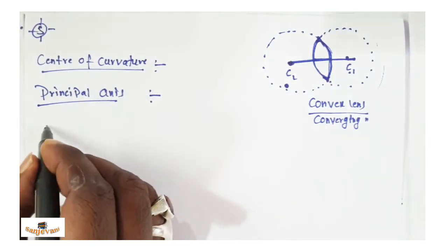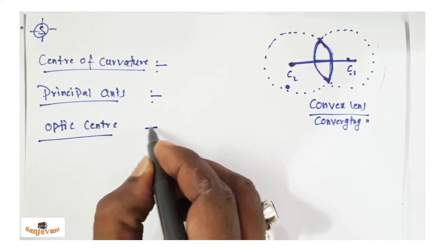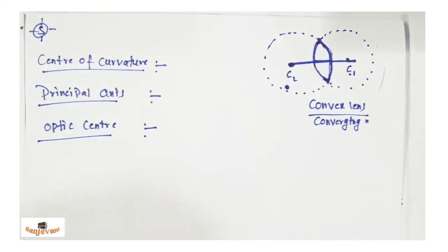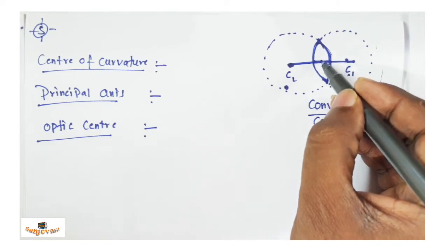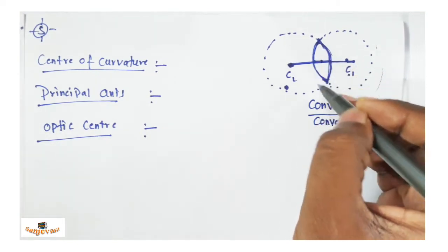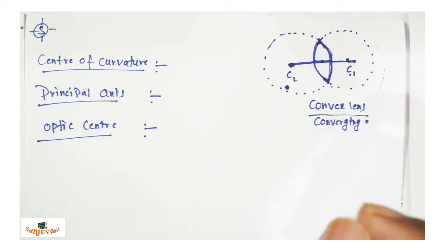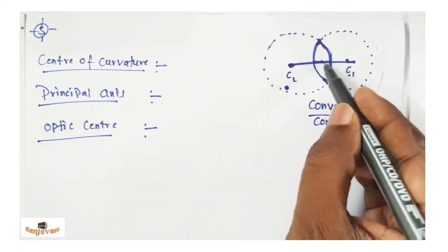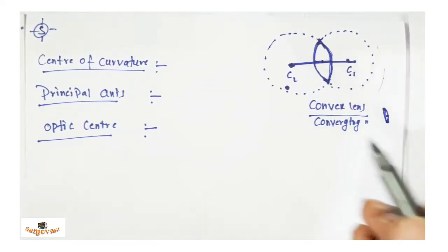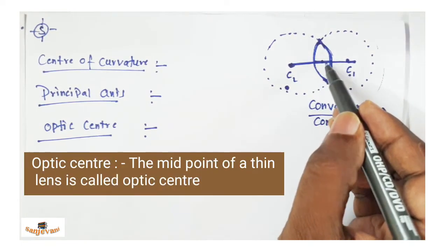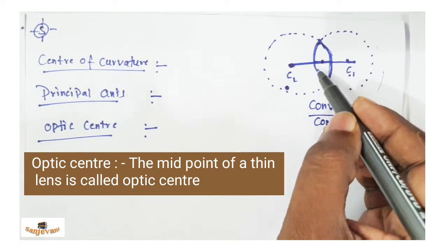What is optic center? The midpoint of the thin lens is called the optic center. To explain, I have drawn a broader lens, but generally in your class you will have a thin lens — it will be very thin. The midpoint of that thin lens is called optic center.